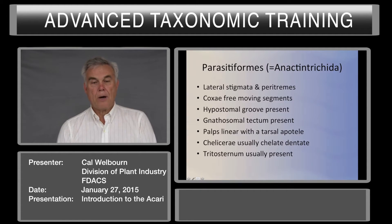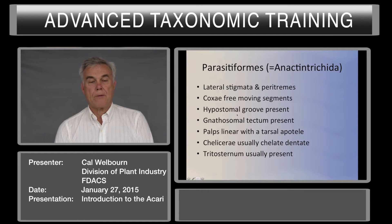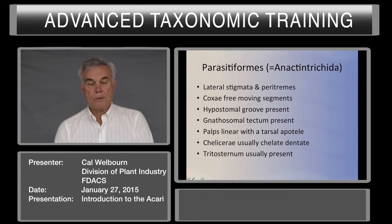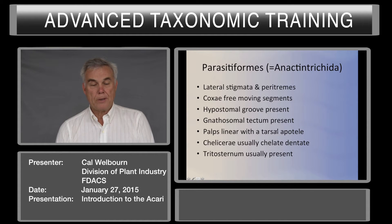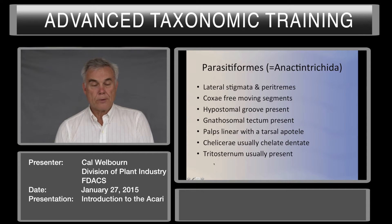Some of the characters of the parasitiformes: they have lateral stigmata and paratremes. The coxae are free-moving segments. They have a hypostomal groove on the ventral side of the gnathosoma. The gnathosmal tectum is present on the upper side of the gnathosoma. Palps are linear with a tarsal apotele. Chelicerae are usually chelate dentate, and the tritosternum is usually present.